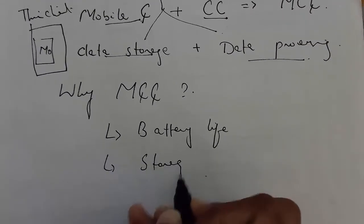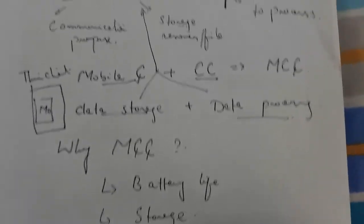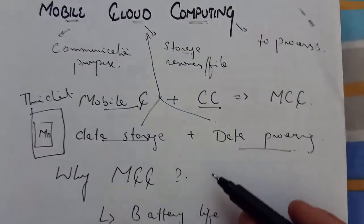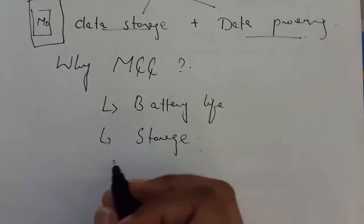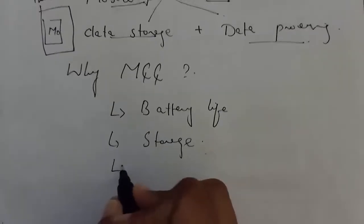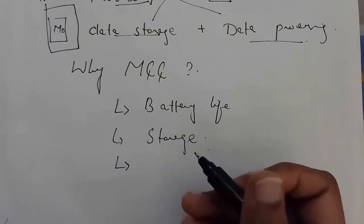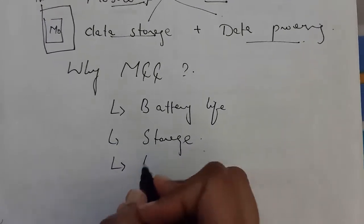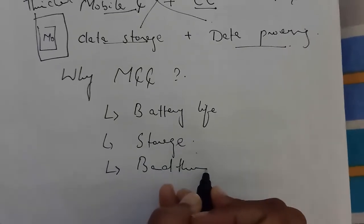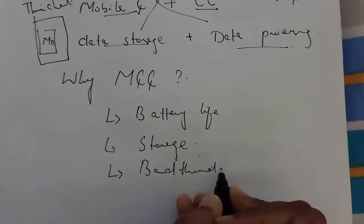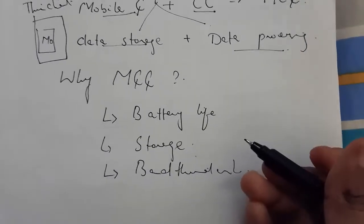Since most of the processing work is done by the cloud, battery life is saved. The third reason for using Mobile Cloud Computing is to save our mobile bandwidth. These are the key reasons why we use Mobile Cloud Computing.